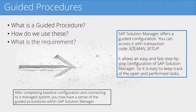After you complete them, guided procedures are a fast, step-by-step way to configure a particular item, making it easy to keep track of tasks and which ones are open. If you start on a Monday and only get so far, you can see how far you got by Tuesday. If you're working with a colleague, you can stop and pick it up later, and you can also rerun some of these steps when necessary.